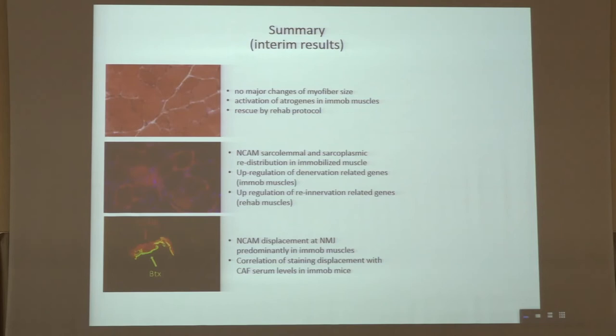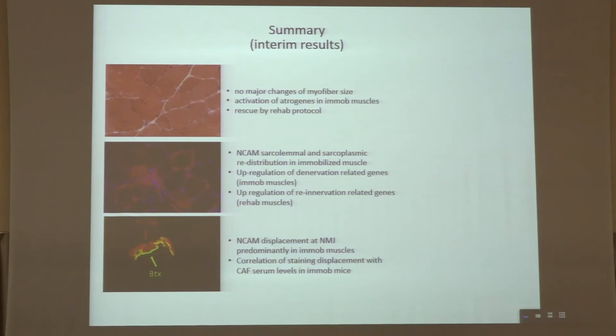We are aware that this study has several limitations, regarding the number of samples and the technique used to evaluate neuromuscular junction morphology. As interim results, despite no major changes at the morphological level, a clear activation of the atrophy program was detected, rescued by the rehabilitation protocol. A sarcolemmal and sarcoplasmic redistribution, together with a displaced distribution from the post-synaptic sites at the neuromuscular junction, was detected upon immobilization, and this was partially rescued by rehabilitation.